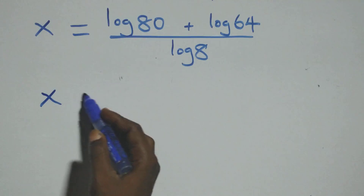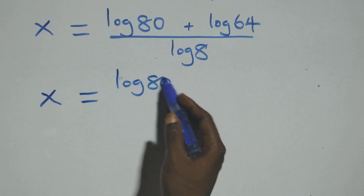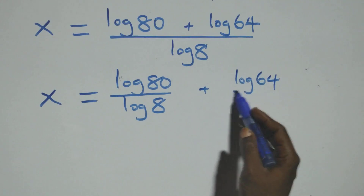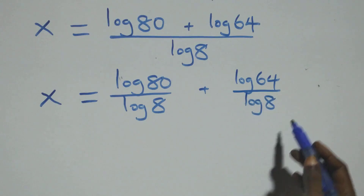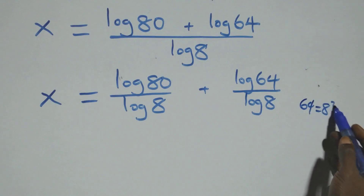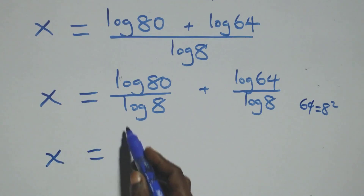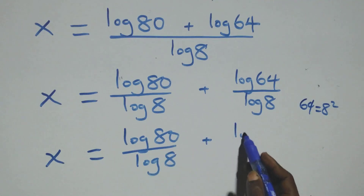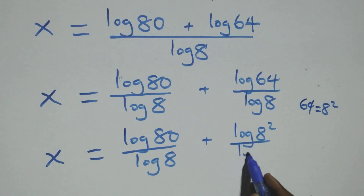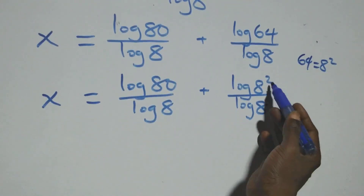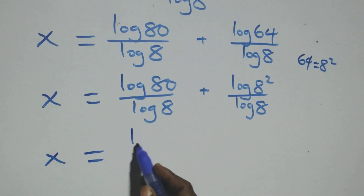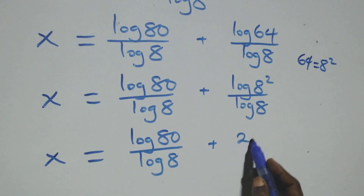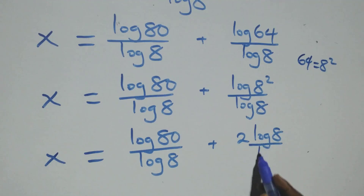Now 64 can be expressed as 8 times 8, that is 8 squared. So we have x equals log 80 over log 8 plus log of 8 squared over log 8. Applying the power rule, log of 8 squared becomes 2 times log 8.